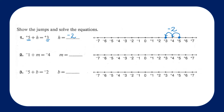For question number 2, we start at the integer negative 1. We want to end up at negative 4. This requires us to make 1, 2, 3 leaps to the left, which means we are decreasing our number. So we are adding a negative 3 to our negative 1, which will give us negative 4.